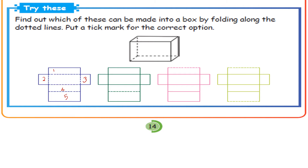For the others, there are no dotted lines, so you cannot make a box. Only one side can be folded — you cannot make a box like that. Here also only one side is there; all other sides you cannot fold. Only this one and this one are good to make a box. Let us see the answer from our computer — yes, this is correct and this is correct.